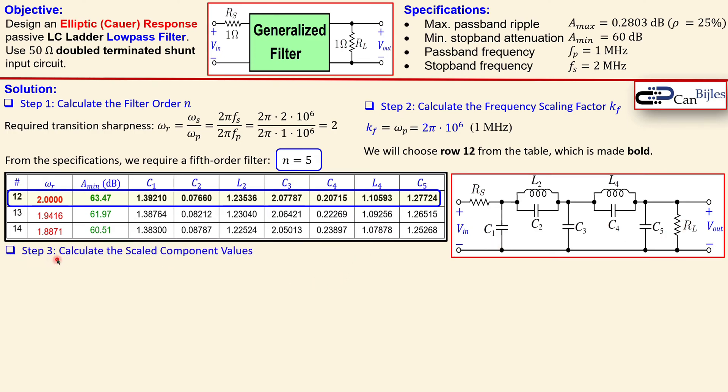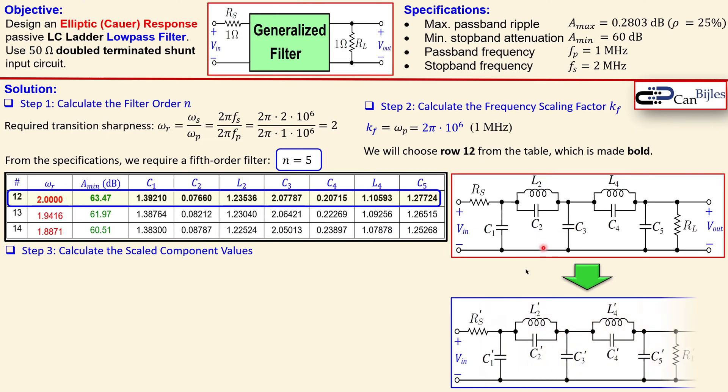So for this third step, step three is calculate the scaled component values. We need to go from here to here. You see the primes here so everything is now scaled up to the required 50 ohm for the resistors and also for the frequencies we have here.